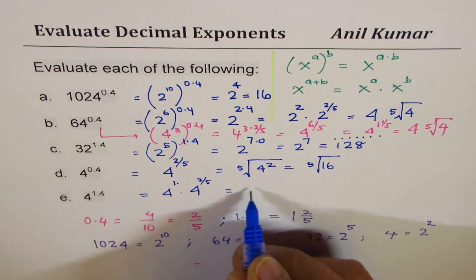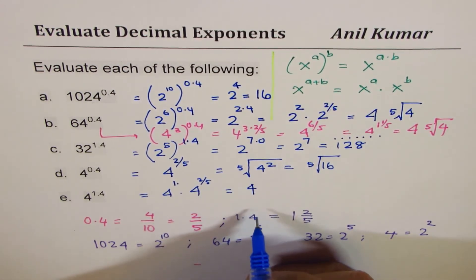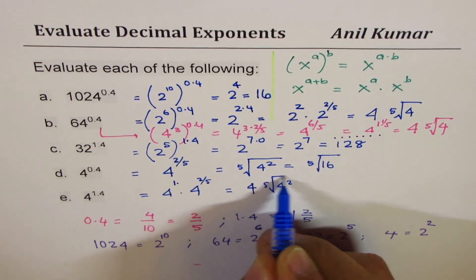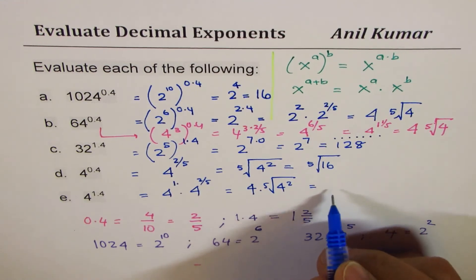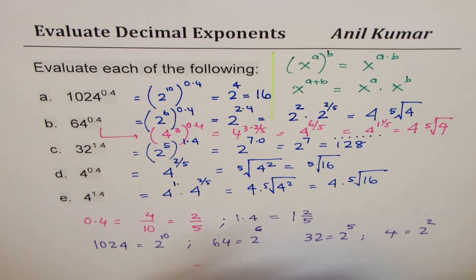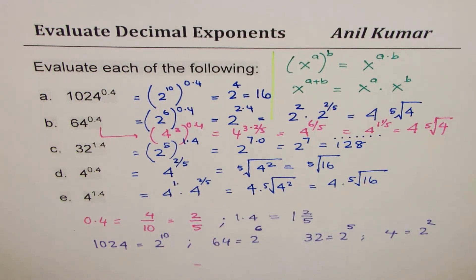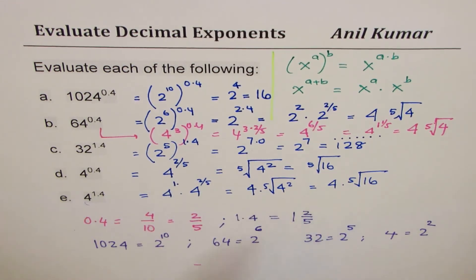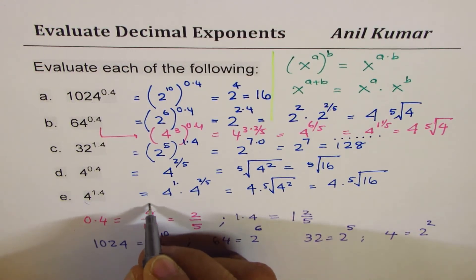So that gives you 4. 5th root of 4 squared, which is 4 times 5th root of 16. Does it make sense to you? So you could split 1.4 or, you see what I did here? So you could split 1.4 and write like this. Well, let me take another way of doing it. So you could do like this.